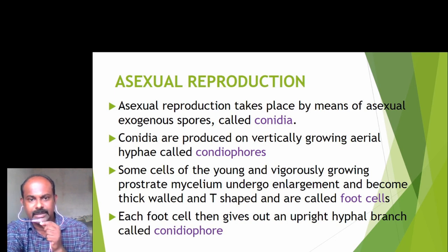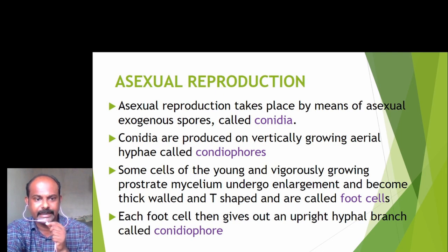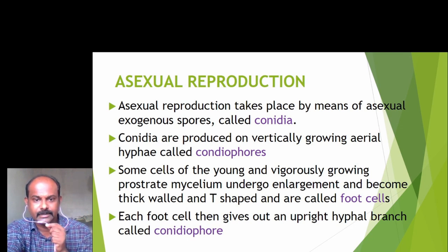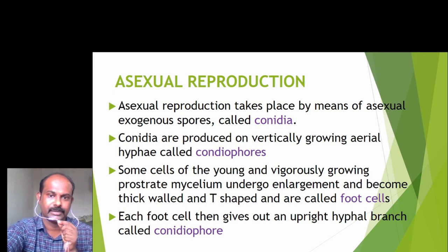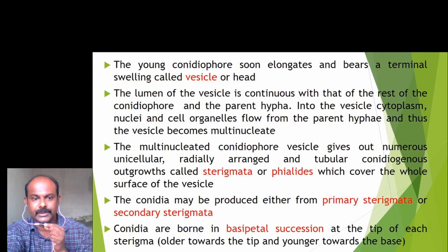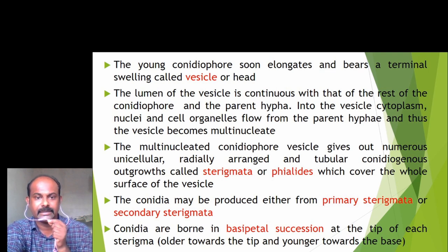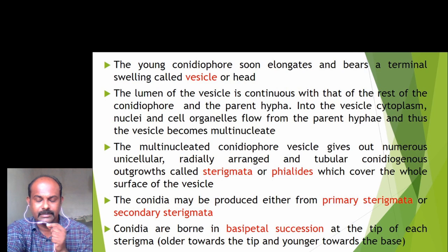Conidia are also called conidiospores. These conidia are formed on vertically growing aerial hyphae called conidiophores. Some cells of the young and vigorously growing prostrate mycelium undergo enlargement, become thick-walled and T-shaped, and are called foot cells. Each foot cell then gives out an upright hyphal branch called the conidiophore. The young conidiophore soon elongates and bears a terminal swelling called the vesicle or head. The lumen of the vesicle is continuous with that of the rest of the conidiophore and the parent hyphae, and nuclei and cell organelles flow into the vesicle from the parent hyphae, making the vesicle multinucleate.